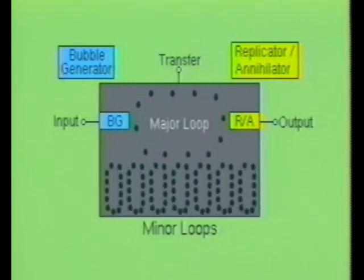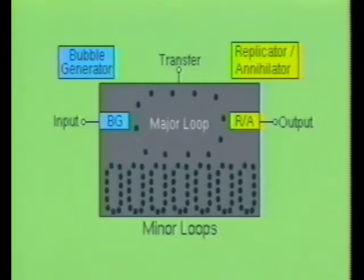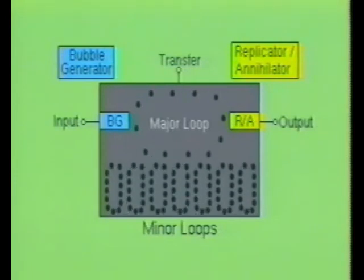Internally, the bubble device is organized with a major and minor loop organization. The major loop is used to control the data stored in each of the minor loops, and is also used to transfer data from a minor loop into the output, or to take bubbles created by the bubble generator and store them into a minor loop. The minor loops are used to store the data.